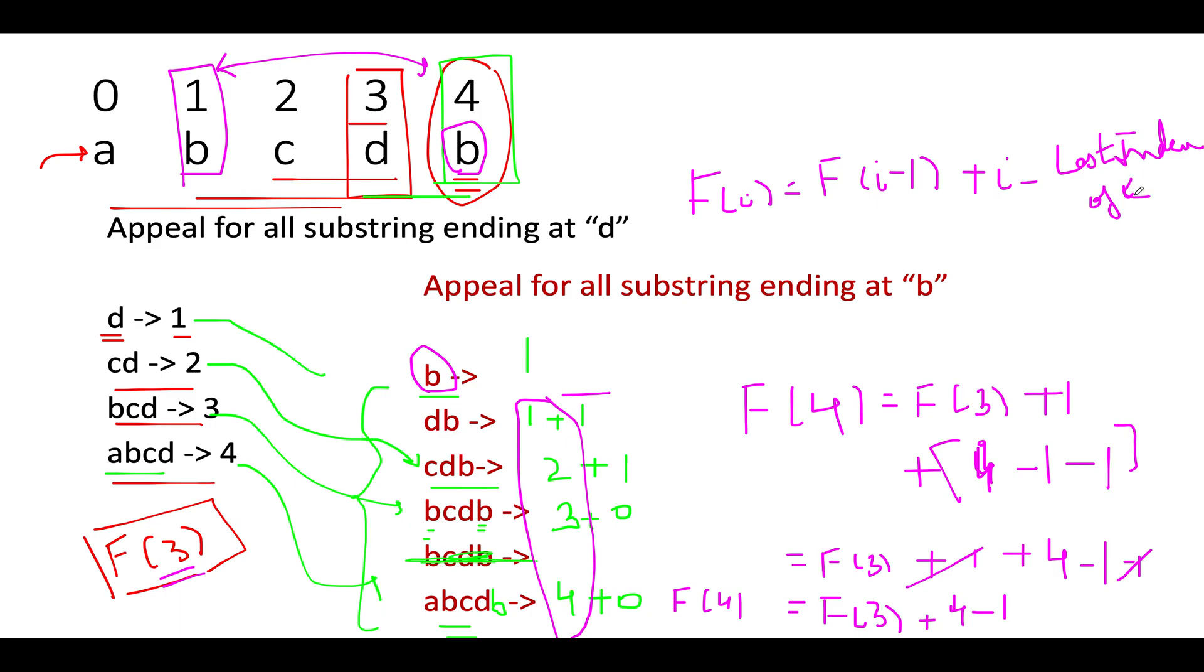So the last occurrence of last index of the current character c. Apologies for the poor handwriting. The final equation turns out to be F of i is equal to F of i minus one plus i minus the last occurrence or last index of c. So this is it. If you are able to derive this equation in an interview, you are done with the algo.